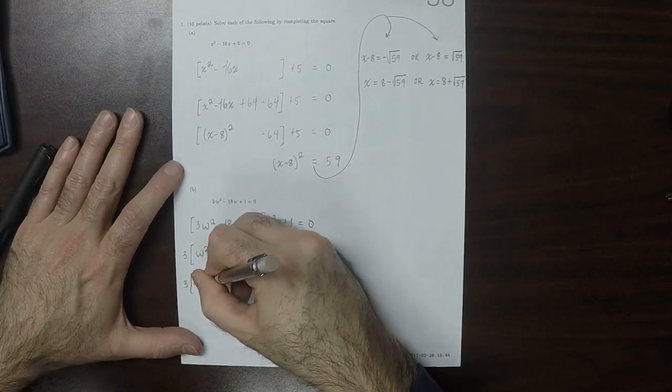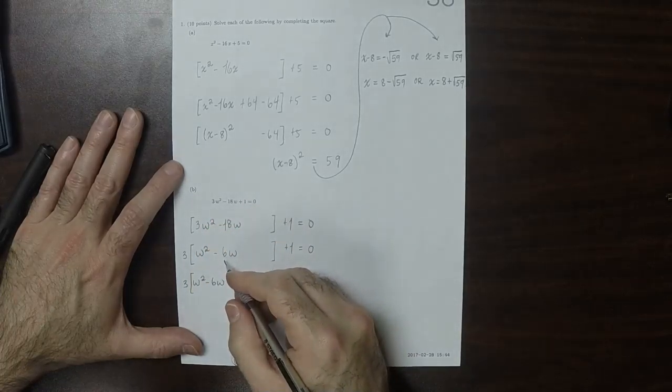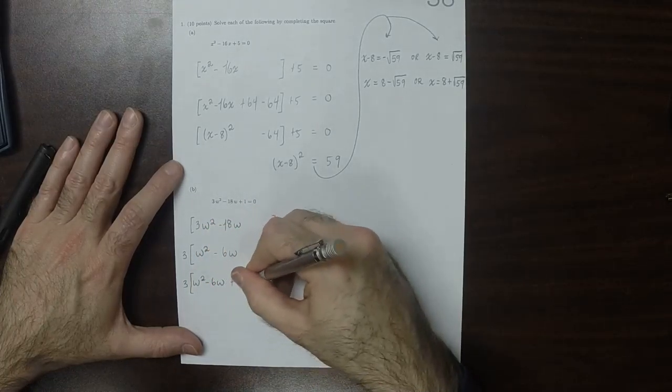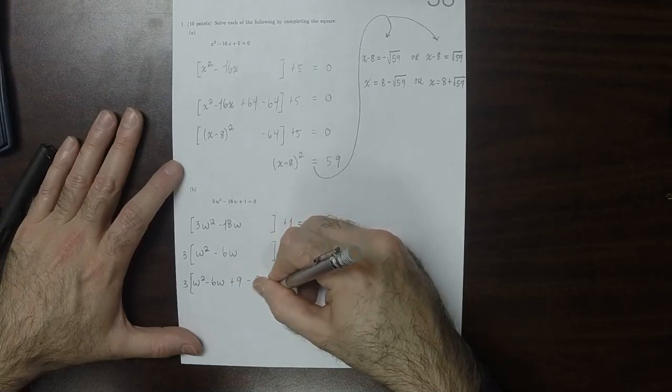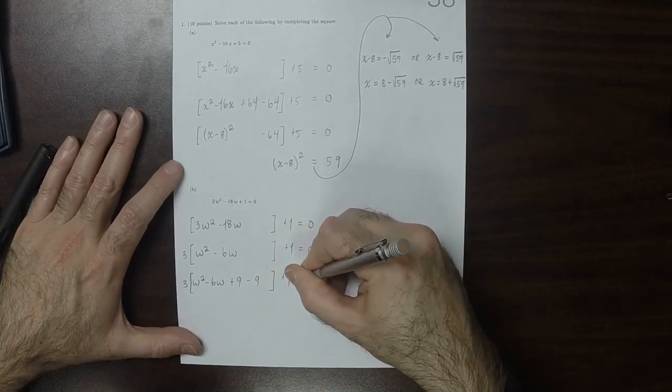So this would be w squared minus 6w. And then half of 6 is 3, squared is 9. So plus 9 and minus 9, plus 1 equal to 0.